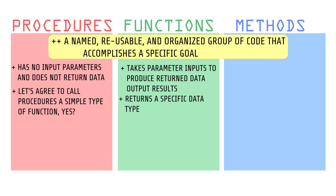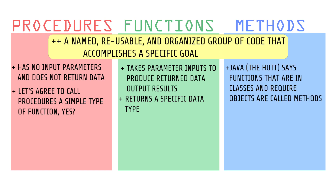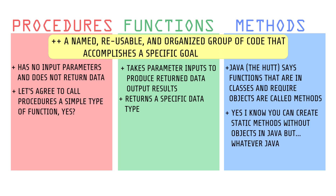But wait, now we have our Java teacher throwing in this methods idea. Java is an object-oriented language, which means you generally have to make a class and objects to do things. Java the Hut decided to be cool and give a function that belongs to a class of objects its own name: methods. That is procedures, functions, and methods.